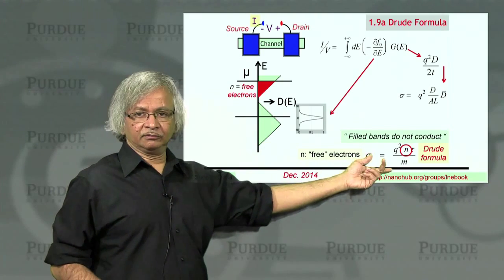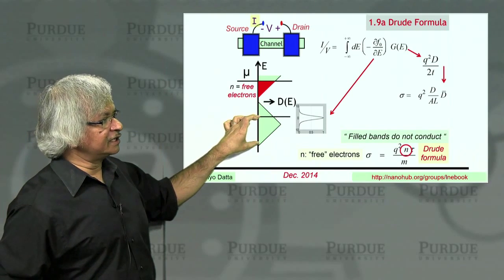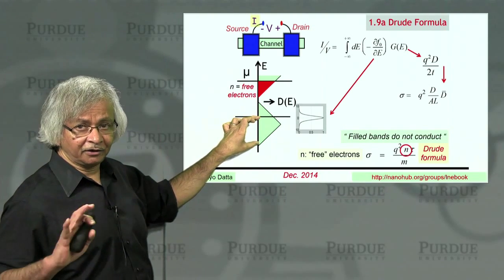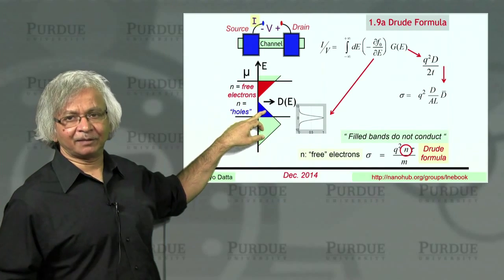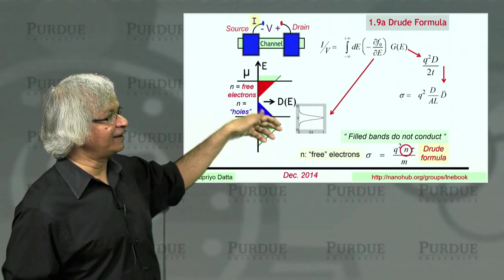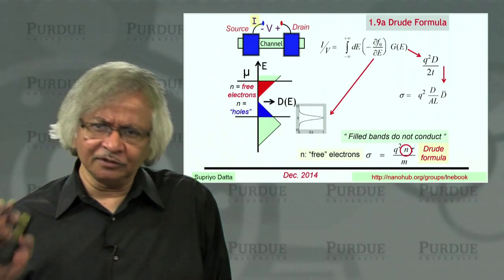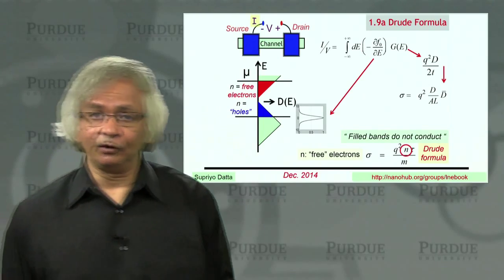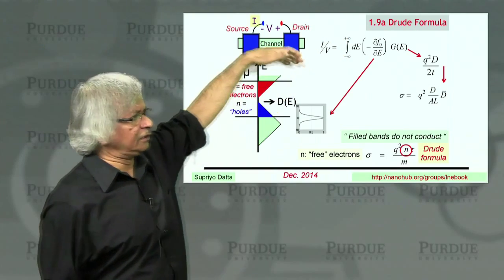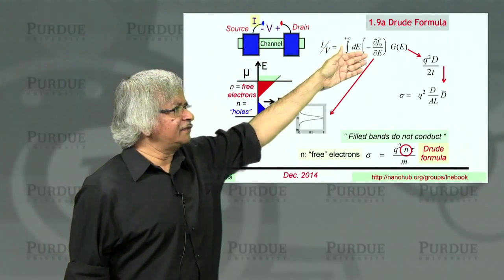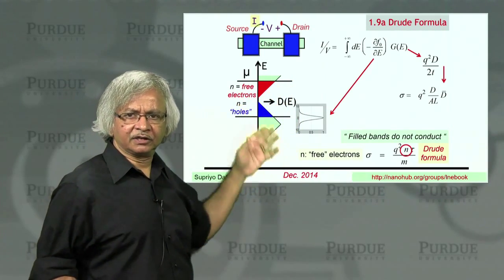But if you want to use the Drude formula, then, of course, you might think you want to use the electrons in here, but not at all. That's not what you should be using. What you should be using is the holes, the empty states up here. So if you're near the top of a band, you should look at the empty states. And as I said, this is one of the things that takes a lot of time to get used to, actually, when you first learn about current flow. But if you adopt this point of view, then I'd say there's no confusion at all. You always use this formula, the DFDE factor is either here or here, depending on where the chemical potential is.